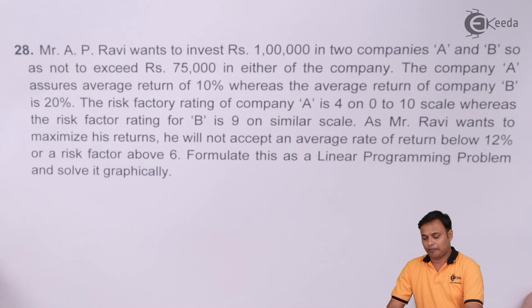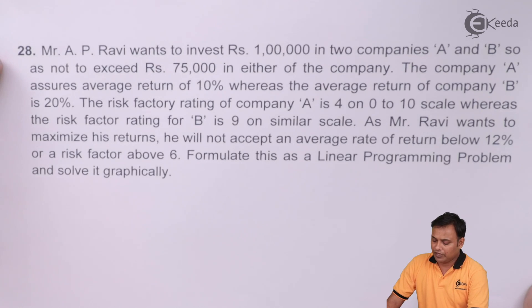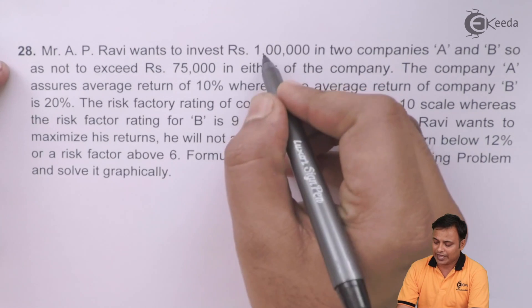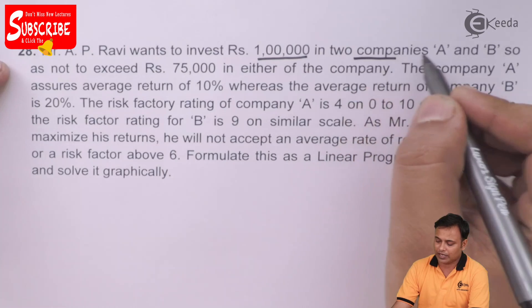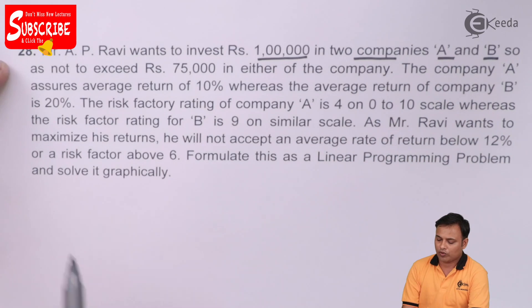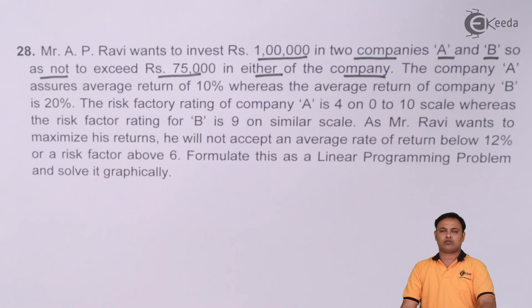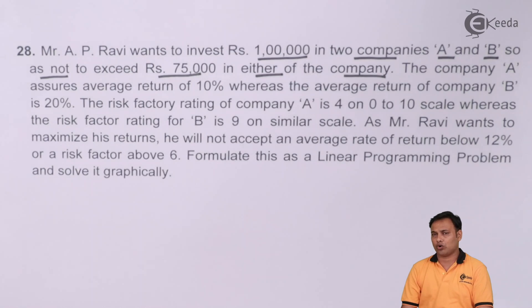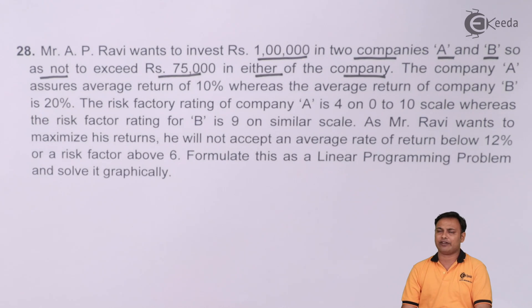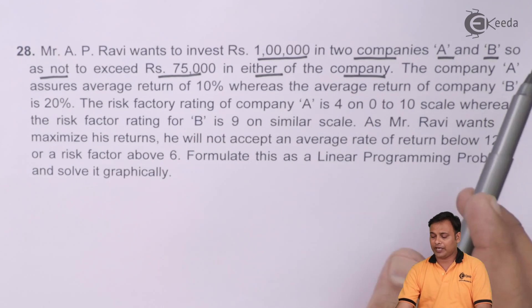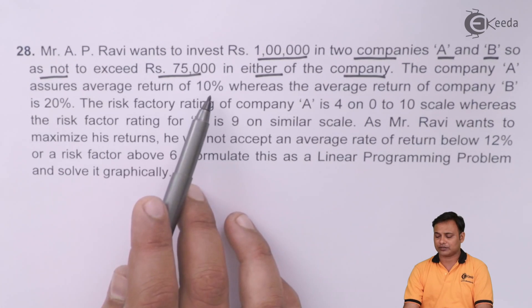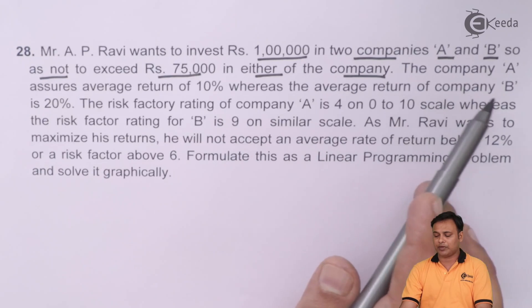Mr. Ravi wants to invest one lakh rupees in two companies A and B, so as not to exceed 75,000 in either of the companies. Company A assures an average return of 10 percent, whereas the return of company B is 20 percent.